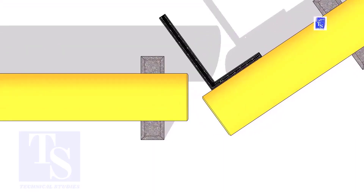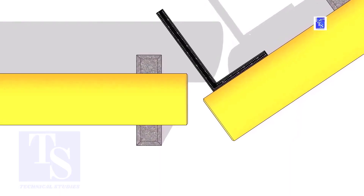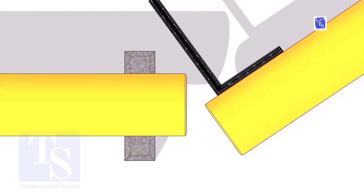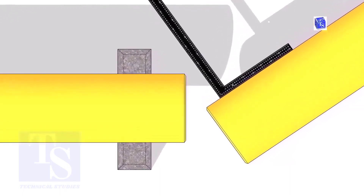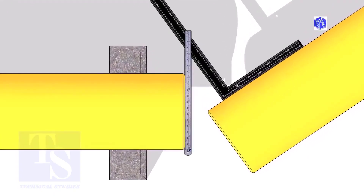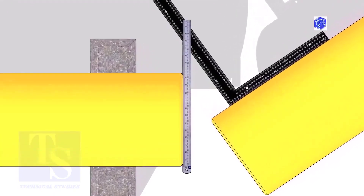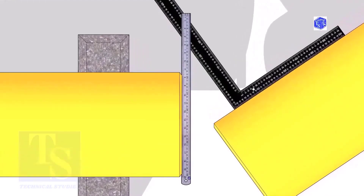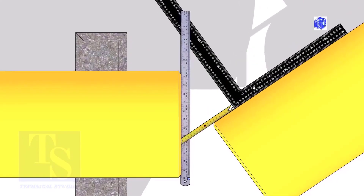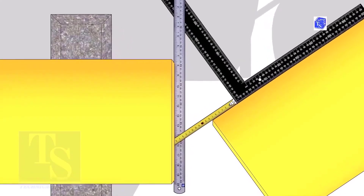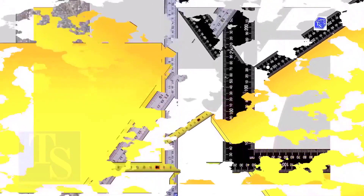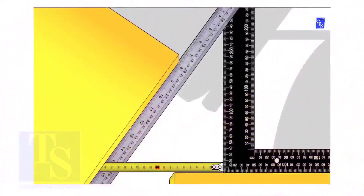Hold a right angle on the pipe as shown. Hold a scale on the other pipe as shown. Measure and note down the dimensions of the triangle.